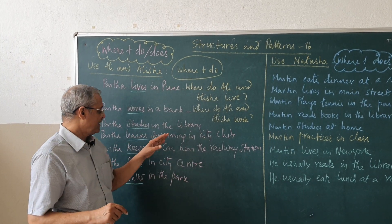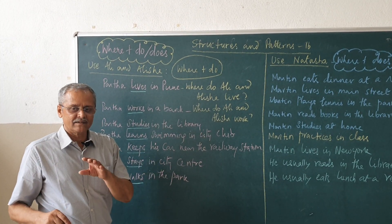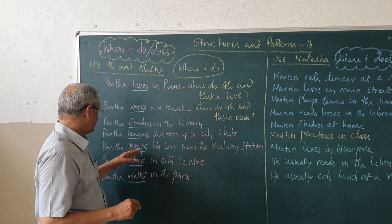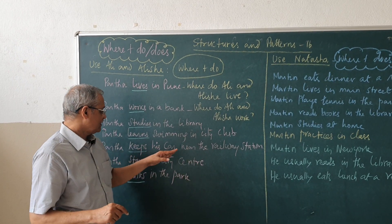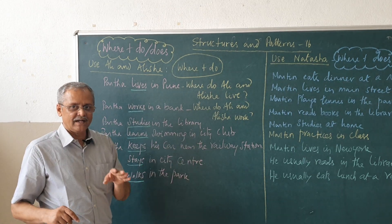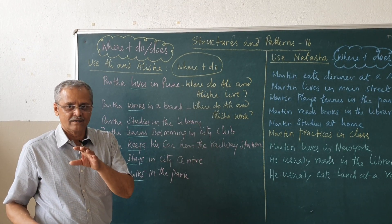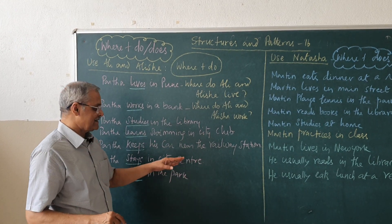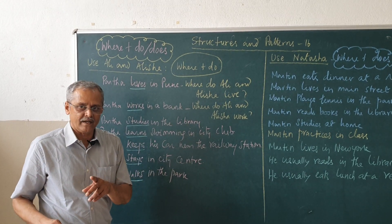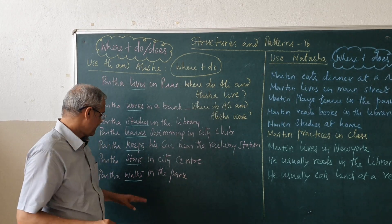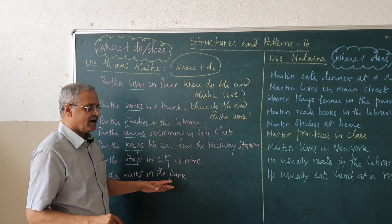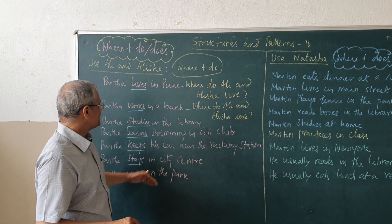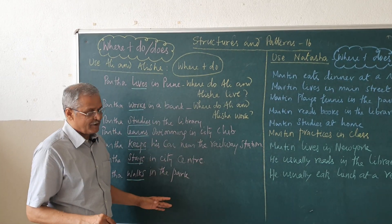Partha learns swimming in the city club — where does Partha learn swimming? In the city club. Partha keeps his car near the railway station — where does Partha keep his car? Near the railway station. Partha stays in city centre — where does Partha stay? In city centre. Partha walks in the park — where does Partha walk? In the park. This is a question and short answer form.